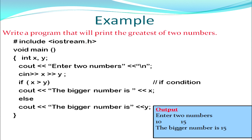An example prints the greatest of two numbers stored in variables x and y. If x is greater than y, the if condition is true and 'the bigger number is x' is displayed. Otherwise the else block executes and 'the bigger number is y' is displayed. The output shown enters 10 and 15 — since 10 greater than 15 is false, the else block executes and 'the bigger number is 15' is displayed.